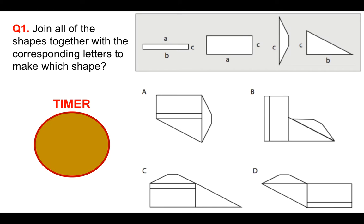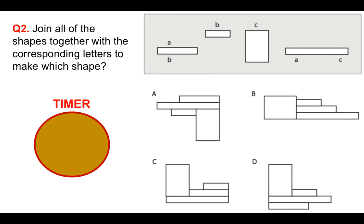You can see the timer with the gold circle that will correspond with 15 seconds each. So join all of the shapes together in this first one to come up with which shape. Try and do it in your head with those corresponding shapes, putting A together, B together, and then C together. So put your answer to question number one in the comment section below. Question number two. Join all of the shapes together with the corresponding letters to come up with which shape. A, B, C, or D.